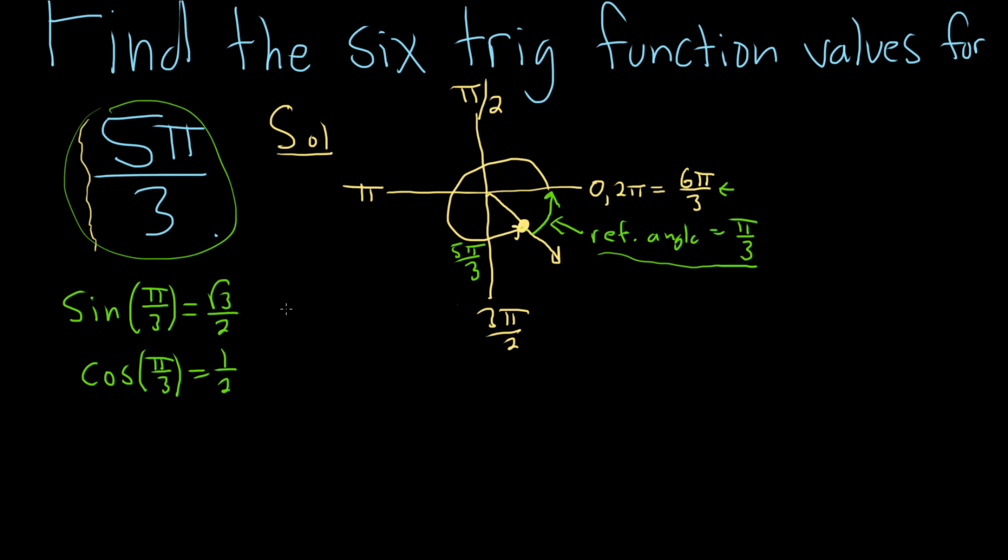So cosecant of π/3, that's just 1 over sine. So you flip the square root of 3 over 2, and that becomes 2 over the square root of 3. And then secant of π/3, you just flip the 1/2, so that becomes 2 over 1, which is 2.